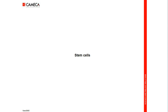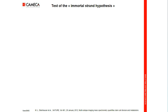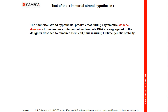We will first use an article focusing on stem cell division. This paper was published in Nature in January 2012 by Matthew Sternhauser, and it tests the Immortal Strand Hypothesis. This hypothesis predicts that during asymmetric stem cell division, chromosomes containing older template DNA are segregated to the daughter destined to remain a stem cell, thus ensuring lifetime genetic stability.